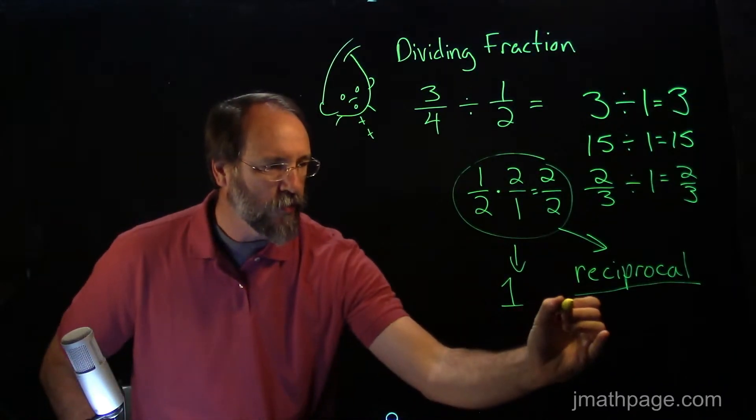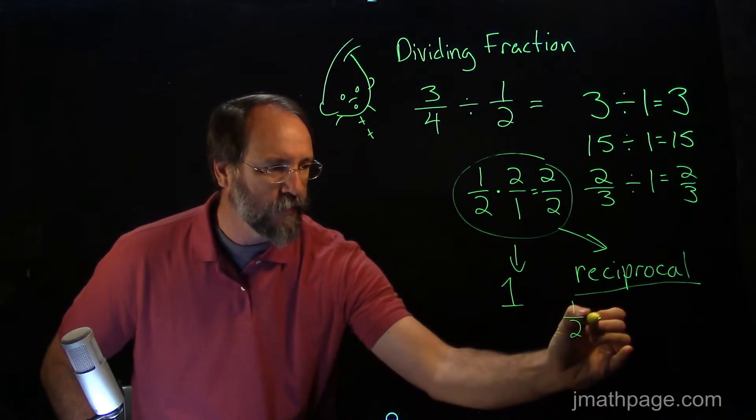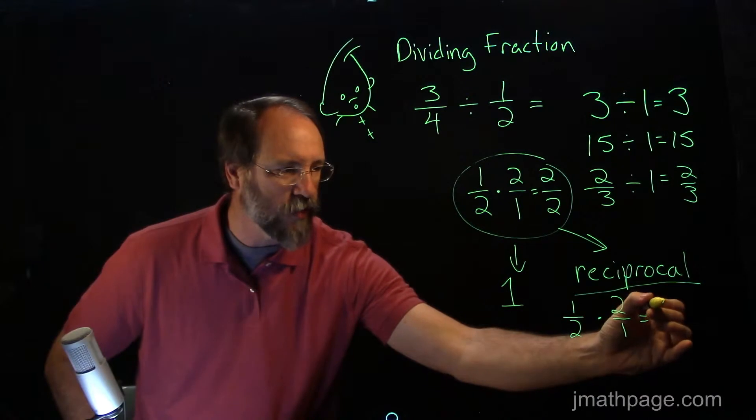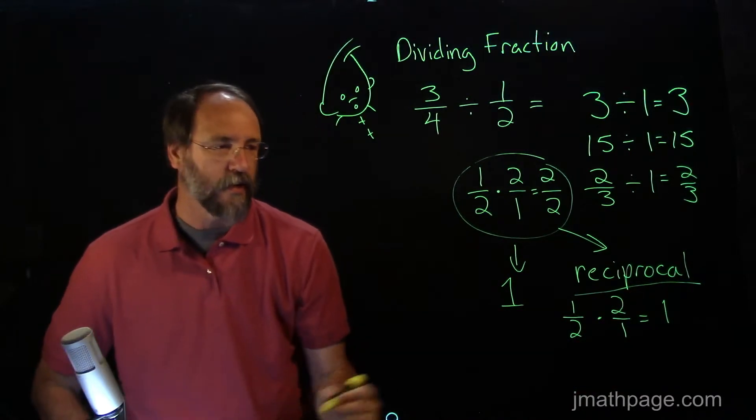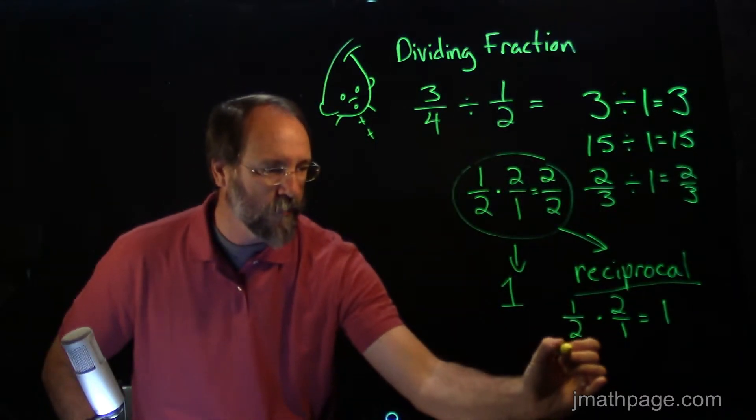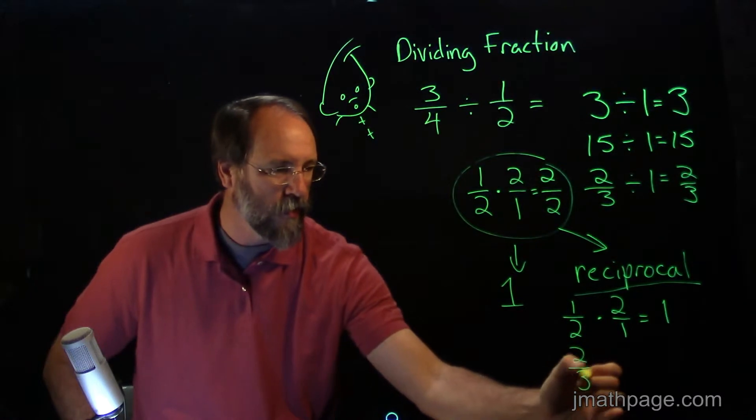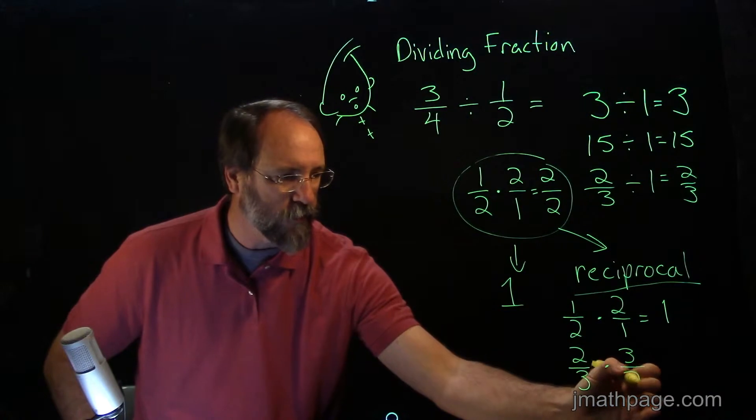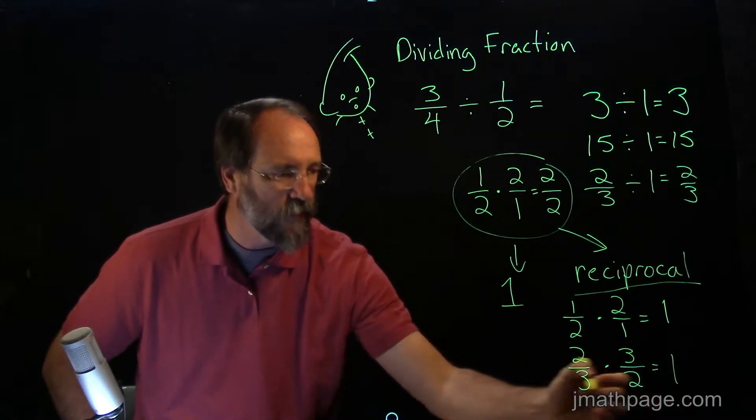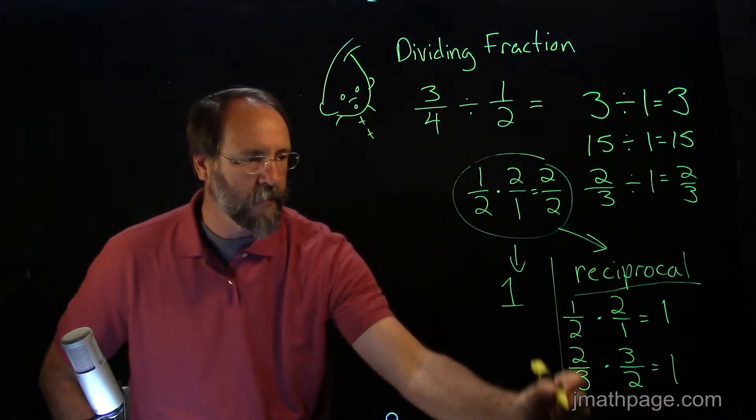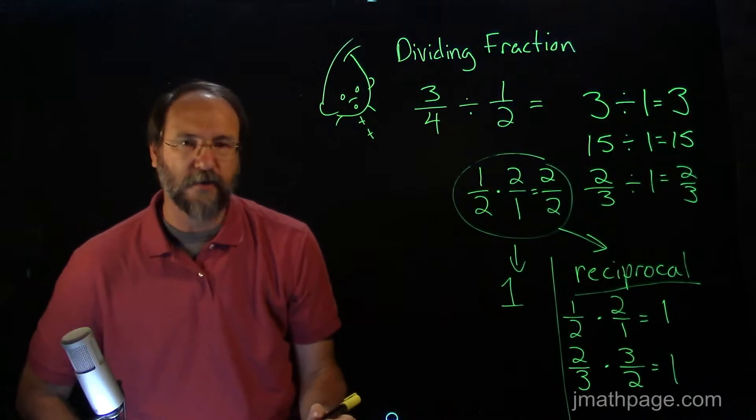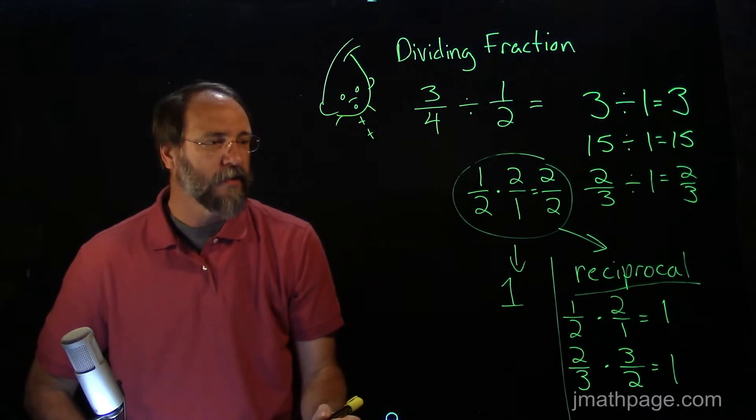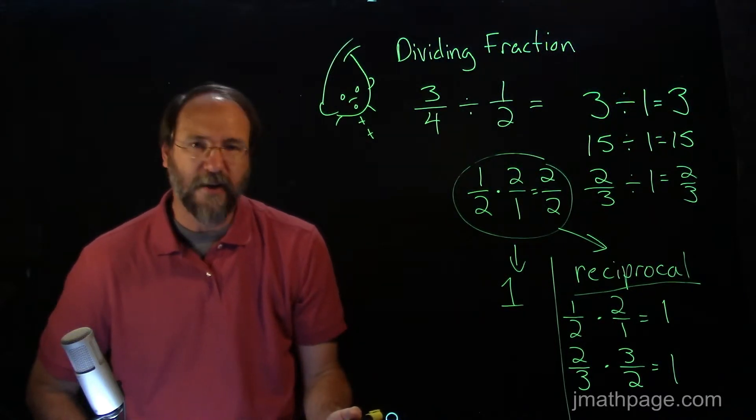Now, the reciprocal of one-half was two over one. So we know that one-half times two over one gave us one. Now, if I use the two-thirds, in order to get two-thirds to equal one, I have to multiply by three-halves. Look at the pattern here. This will help you when multiplying and dividing fractions in the future. A reciprocal is the number necessary that you need to use in order to multiply another number to make one.